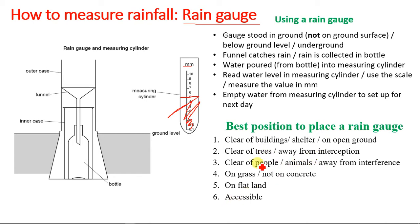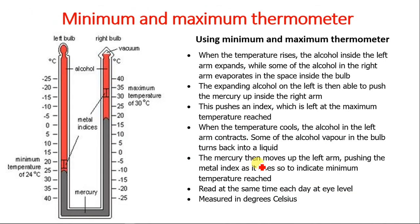The minimum and maximum thermometer is used to measure the highest and lowest temperature. When the temperature rises, the alcohol inside the left arm of the thermometer expands.